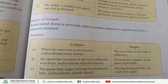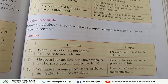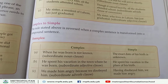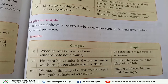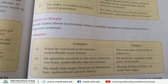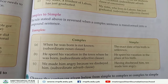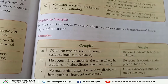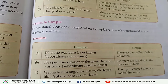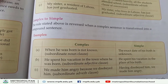'Having disobeyed him, we made him angry.' So here, complex sentences using noun clause, adjective clause, and adverb clause have been transformed into simple sentences with the appropriate changes.